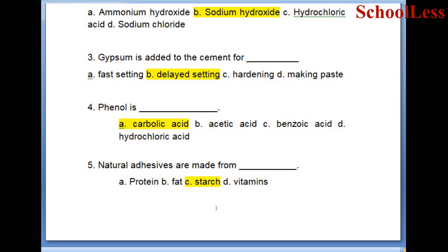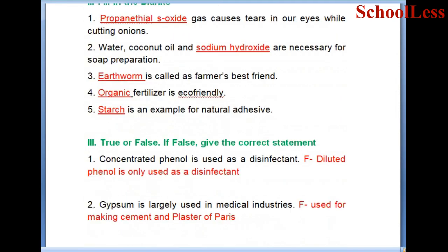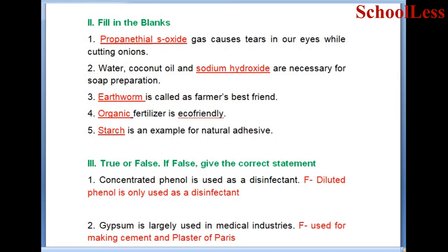Question 5. Natural adhesives are made from: A. Protein, B. Fat, C. Starch, D. Vitamin. Starch is very important, so C - starch is the correct answer.